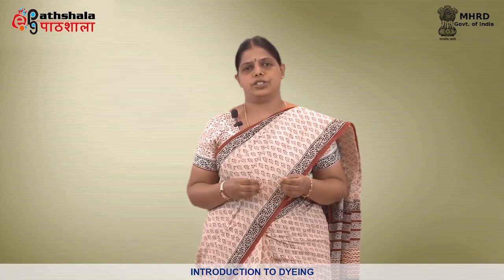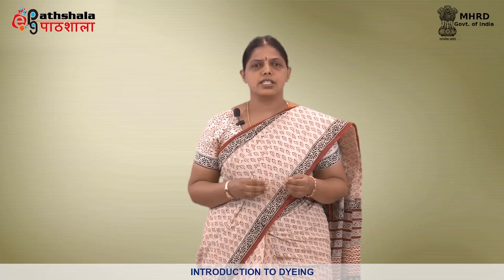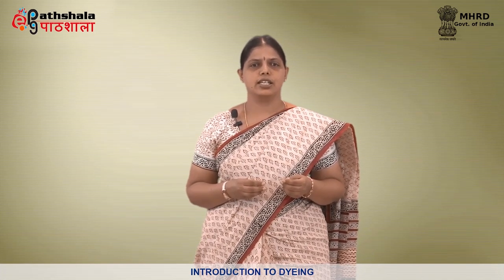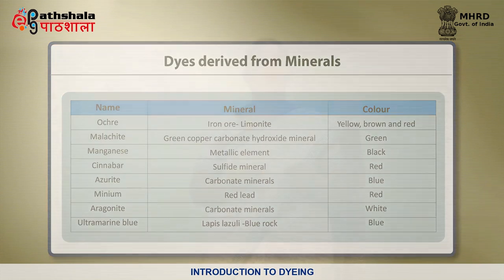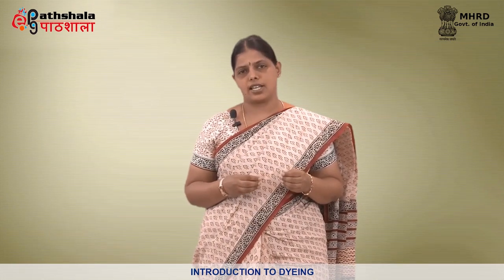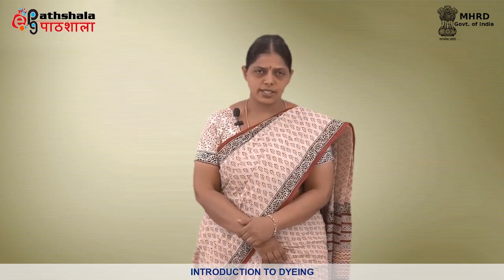The third sub-classification under natural dyes is from mineral origin. Natural pigments are found in rocks and soils. Mineral dyes such as ochre, malachite, manganese, cinnabar, azurite, minium, aragonite, and ultramarine blue are extracted from different minerals. The fourth sub-classification under natural dyes is microbial and fungal origin. Lichens and mushrooms yield color from microbial and fungal origin. Lichens are plant-like organisms that grow on bark, leaves, rocks, roofs and walls and produce dyes for textiles.